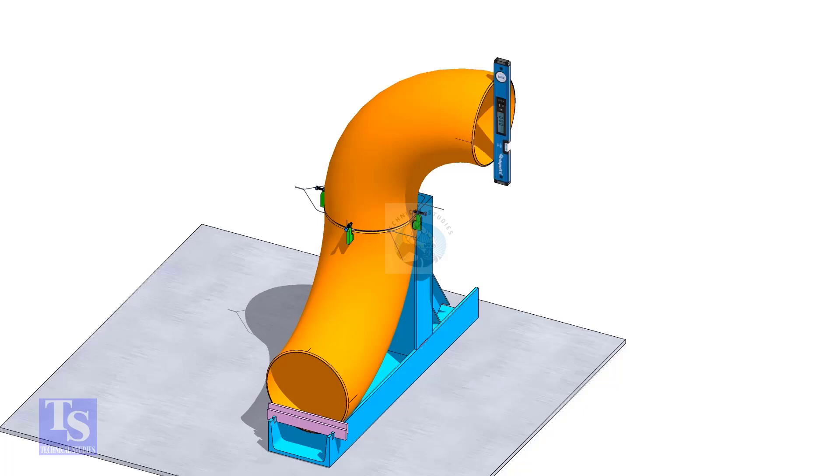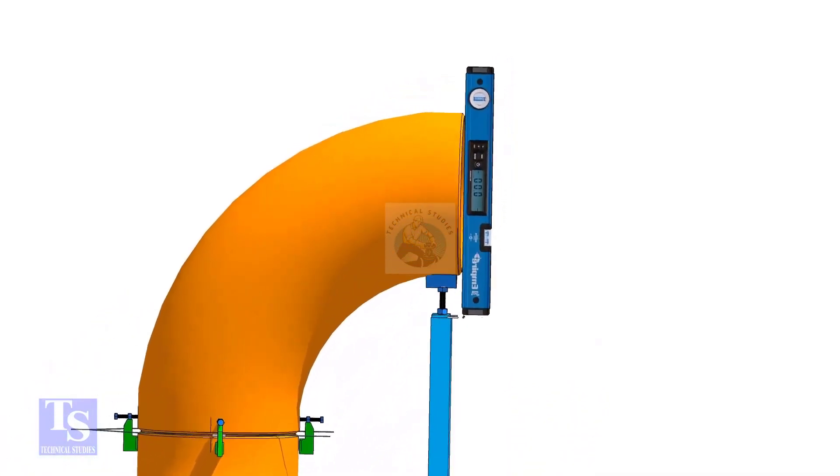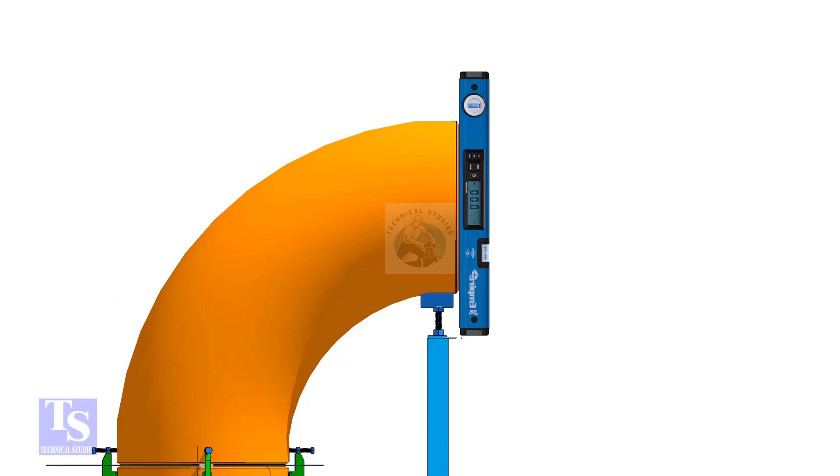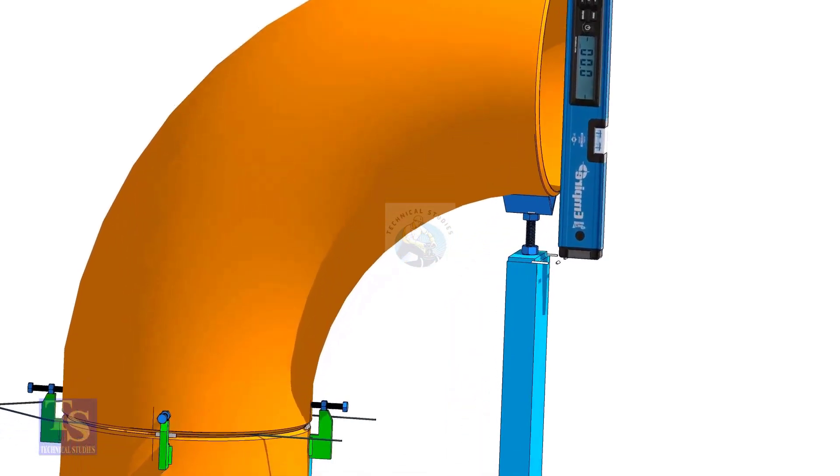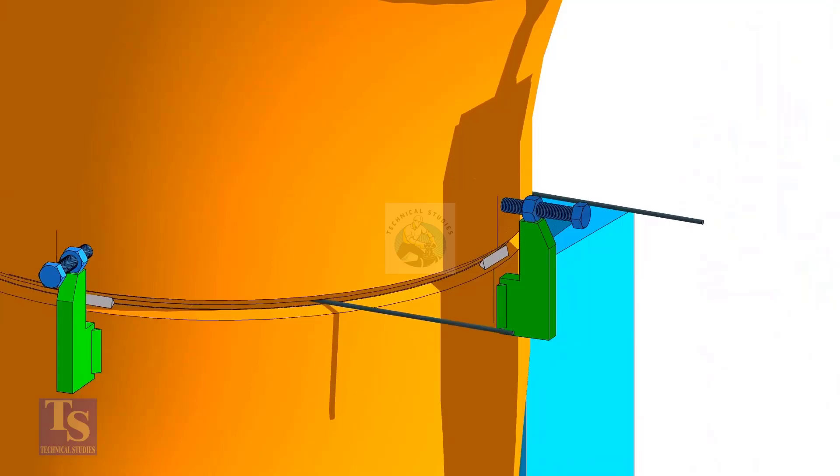Check the verticality of the elbow face. Tack weld on this side and the back side of the elbow.